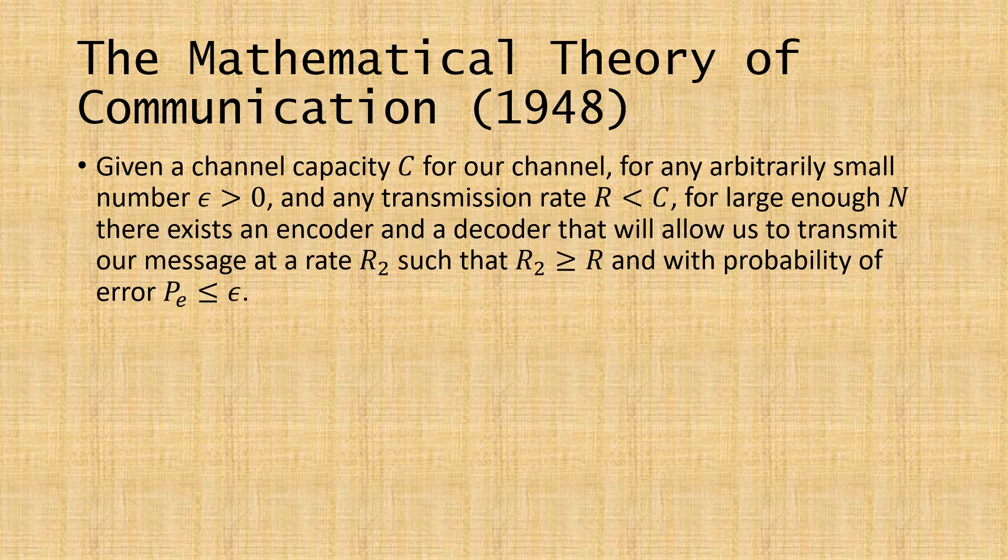Shannon says, given a channel capacity C for our channel, for any arbitrarily small number epsilon, which is greater than zero, and any rate R that is less than the channel capacity, for large enough N, which is the length of our encoded sequence, there exists an encoder and a decoder that will allow us to transmit our message at a rate greater than or equal to R, and with a probability of error less than or equal to epsilon.